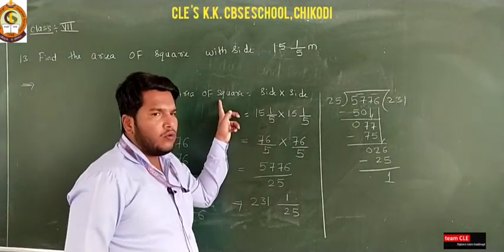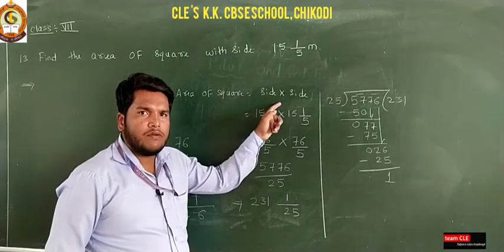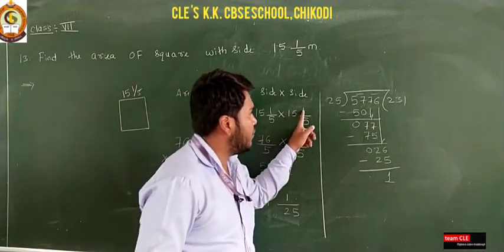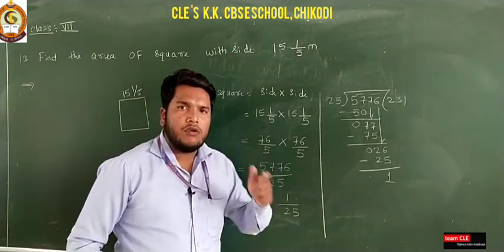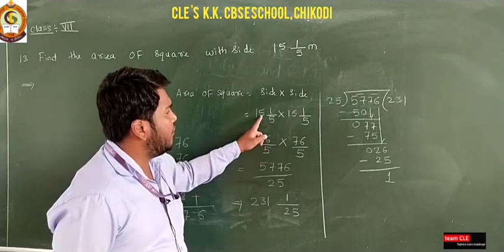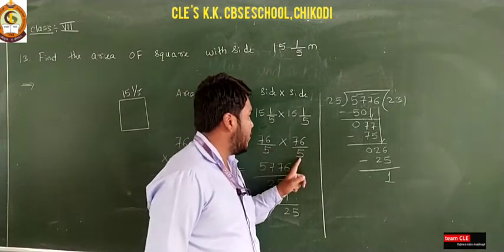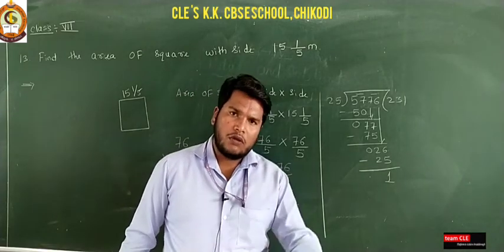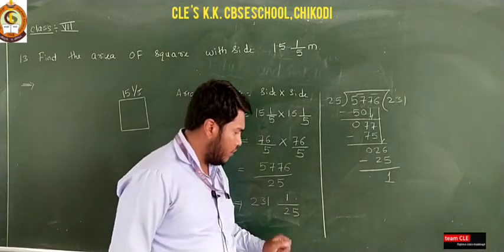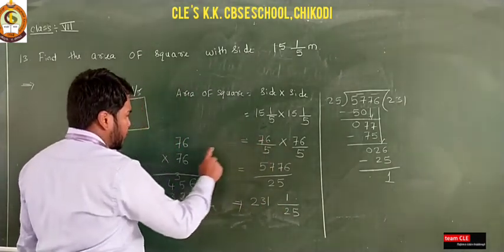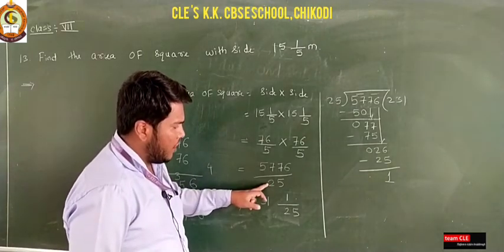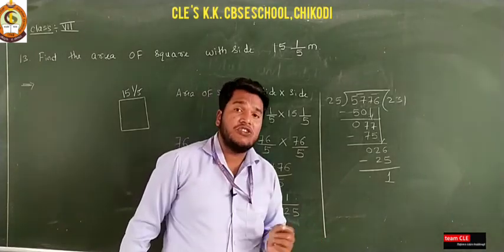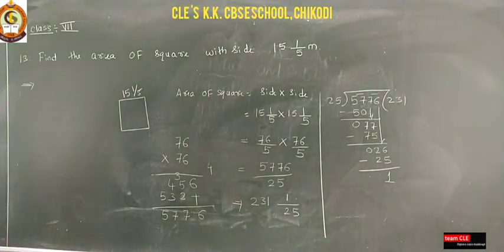To summarize Question 13: the formula for area of a square is side × side. The side is 15 1/5, so we multiply 15 1/5 × 15 1/5. Convert to improper fraction: 15 × 5 = 75, plus 1 = 76/5, giving 76/5 × 76/5. Multiplying numerators: 76 × 76 = 5776, denominator: 5 × 5 = 25, so 5776/25. Dividing gives 231 and 1/25. Dear students, please note down this 13th problem.